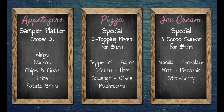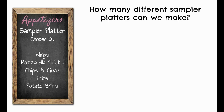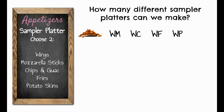Let's come up with some scenarios. Say I'm going to a restaurant with appetizers, pizza options, and ice cream options. We have a sampler platter, a special two-topping pizza for $9.99, and a special three-scoop sundae for $4.99. For the sampler platter, I can choose any two. To find how many different sampler platters we can make, I could write out all combinations — wings with mozzarella sticks, wings with chips and guac, wings with fries, wings with potato skins, and so on for all the other items.